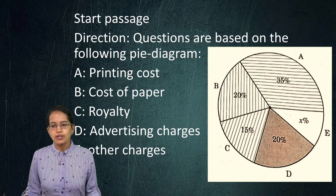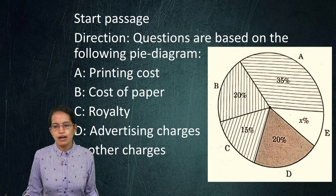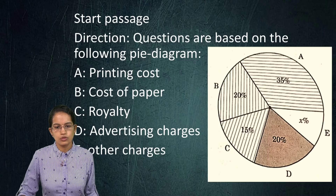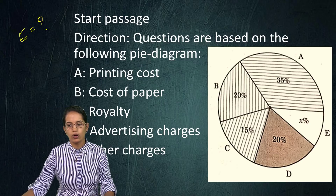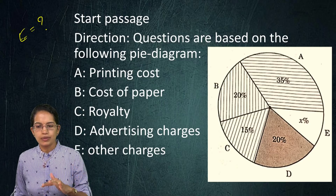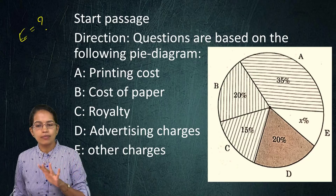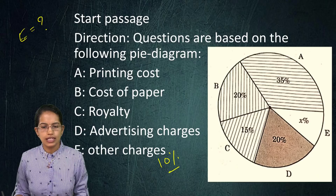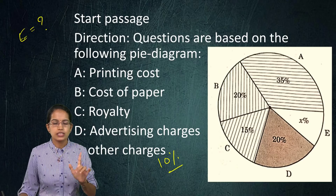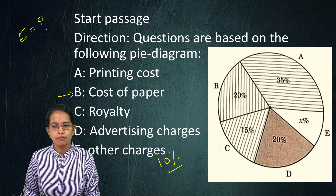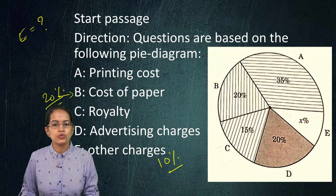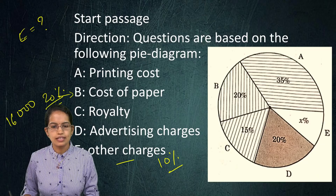For the pie chart question, percentages for A, B, C, D are given; E (other charges) is unknown. Adding the known values: 35 + 15 + 20 + 20 = 90%, so other charges = 10%. The first sub-question: cost of paper (B) is 20% = 16,000, so at 10%, other charges = 8,000.